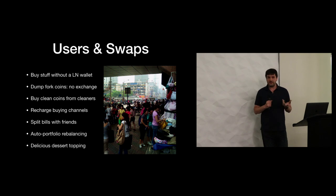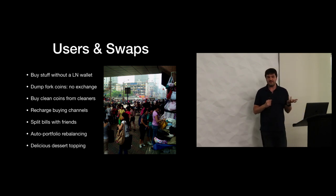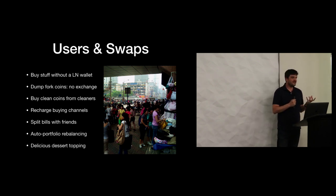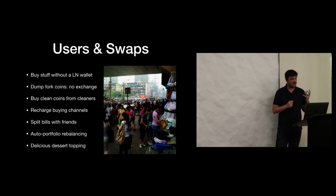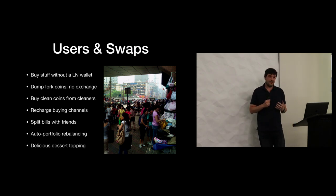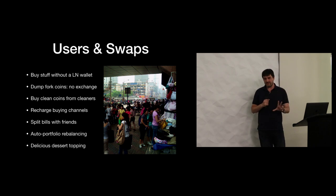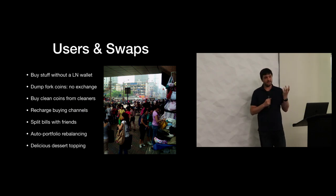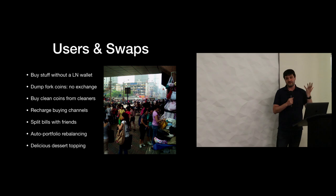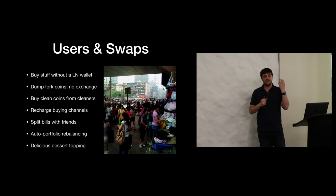Everybody has fork coins — probably more than you even know — and it's a pain to claim them. Are they ever going to be connected to the Lightning network? Is someone going to create a Lightning wallet and manage channels for every fork coin? What you really want is to get rid of them. You could create a wallet with one purpose: find fork coins and swap them away into your Bitcoin channels, with minimal trust required since they're just refilling your Bitcoin channels.